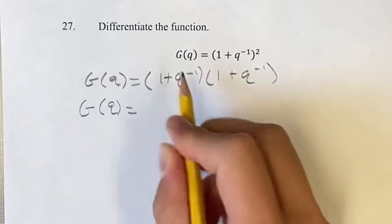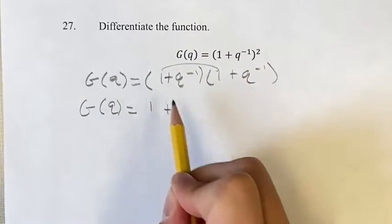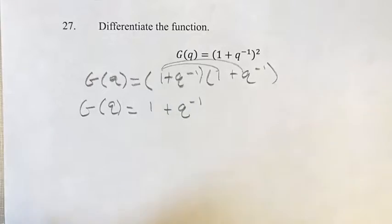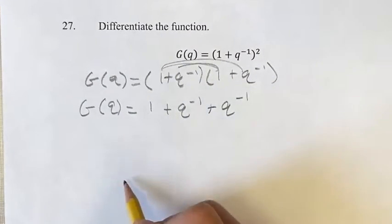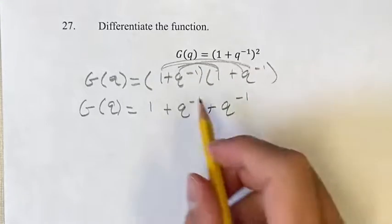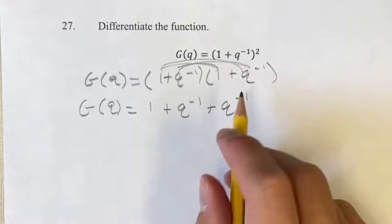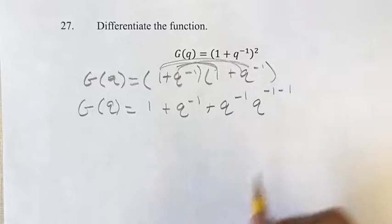we get 1 plus 1 times q to the negative 1, which is q to the negative 1, plus 1 times q to the negative 1, still q to the negative 1, plus q to the negative 1 times q to the negative 1, which is q to the minus 1 minus 1.